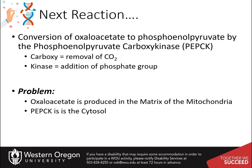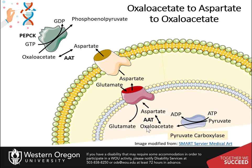However, the transport of oxaloacetate from the matrix to the cytosol, where it can be used as a substrate for this reaction, is a problem. Oxaloacetate cannot cross the inner membrane of the mitochondria. To leave the mitochondrial matrix, oxaloacetate has to first be converted to aspartate by the aspartate aminotransferase enzyme, AAT.